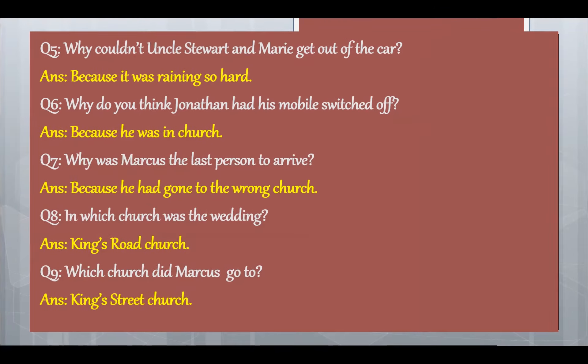Question 5: Why couldn't Uncle Steward and Mary get out of the car? Answer: because it was raining so hard. Question 6: Why do you think Jonathan had his mobile switched off? Answer: because he was in the church. Question 7: Why was Marcus the last person to arrive? Answer: because he had gone to the wrong church.